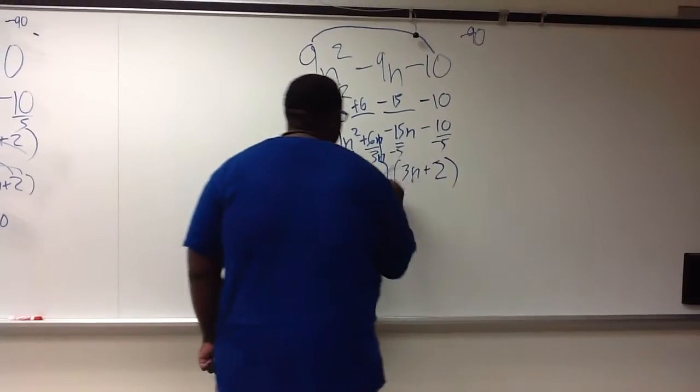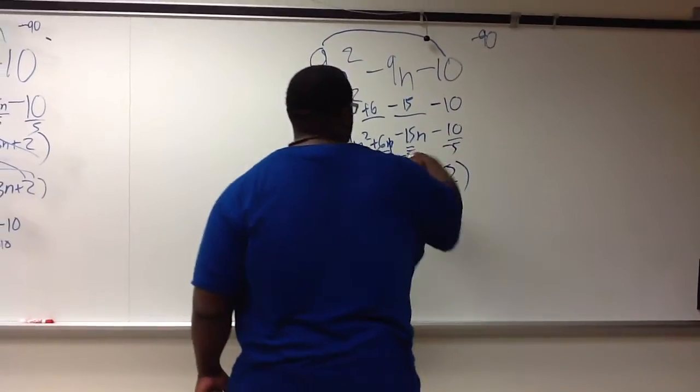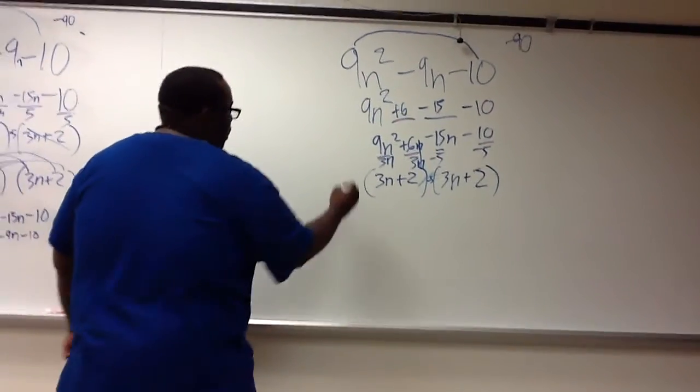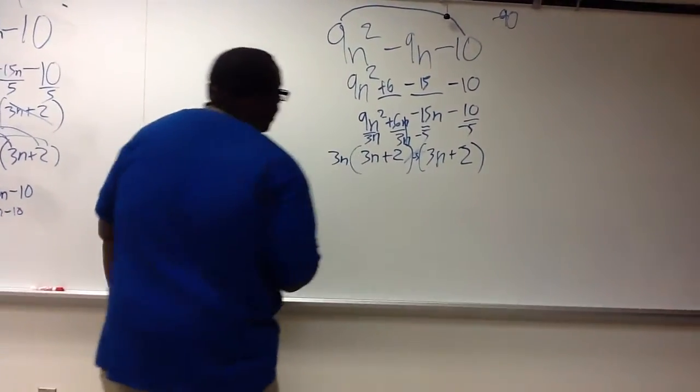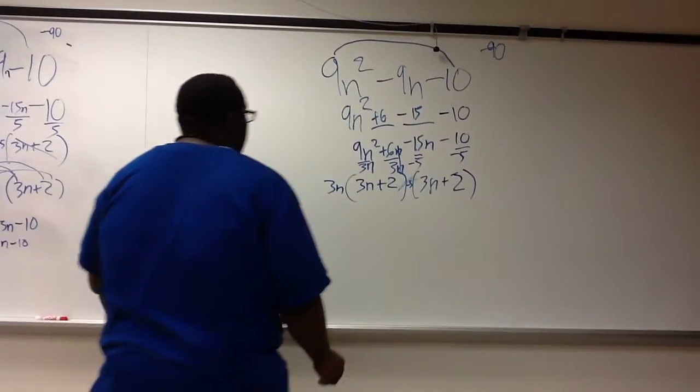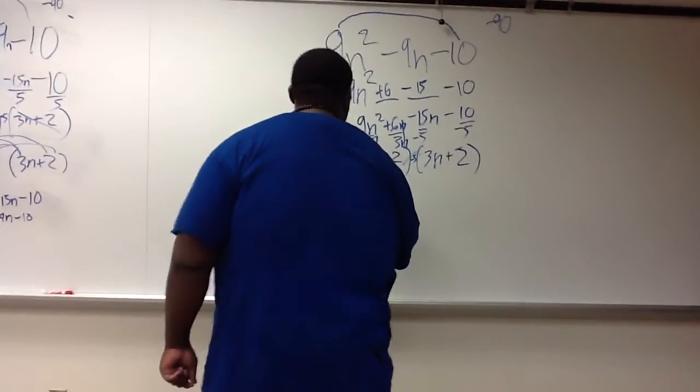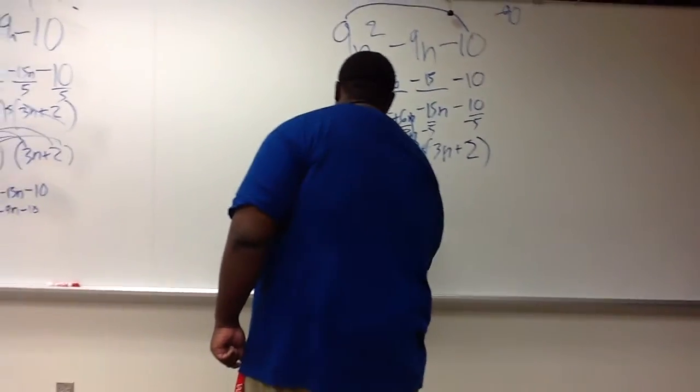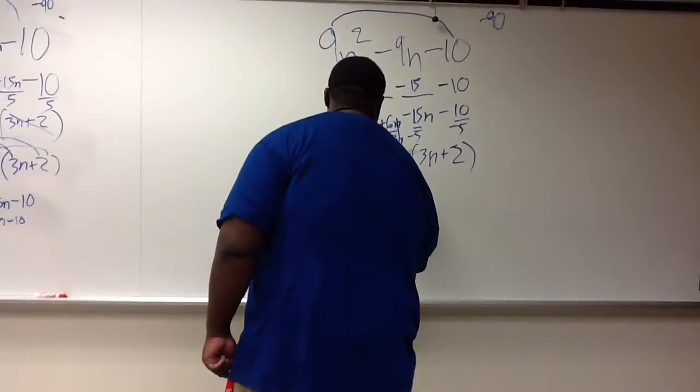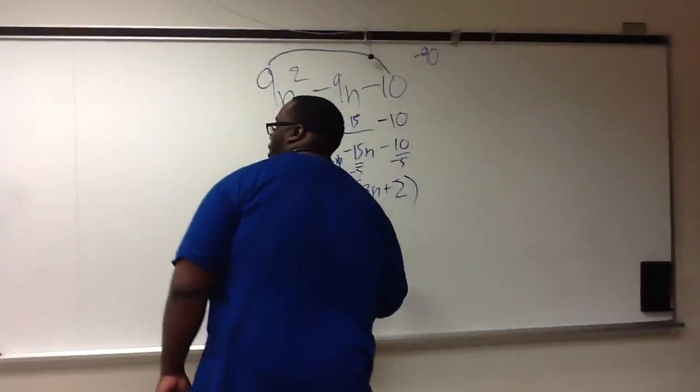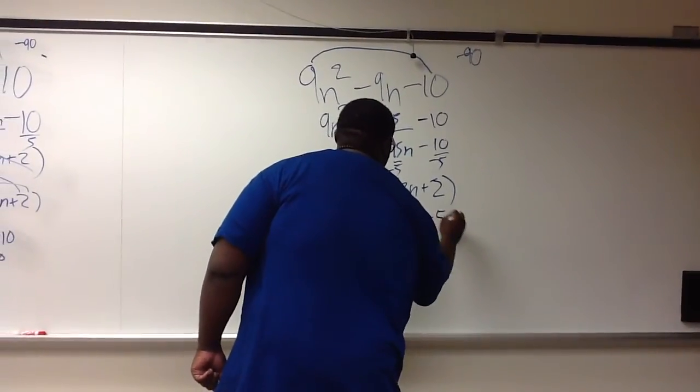Put both of those in parentheses there. Now, we took a 5, a negative 5 out of here, and we took a 3n out of that side. So what we have here is 3n plus 2, and 3n minus 5.